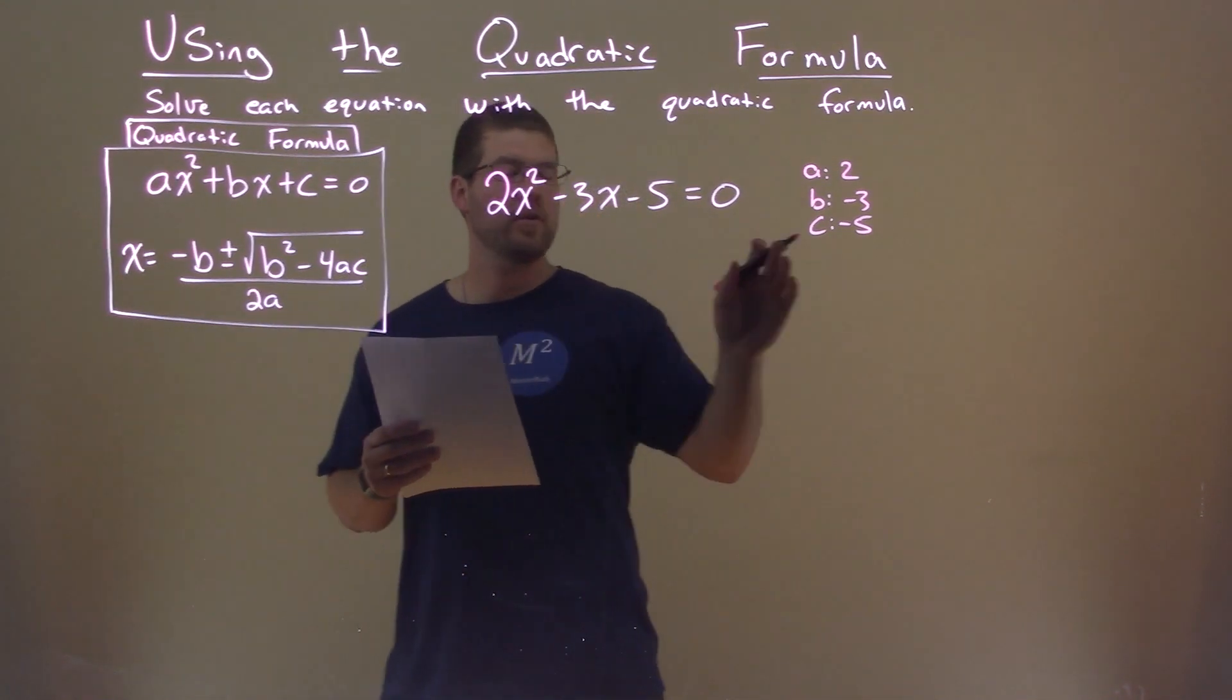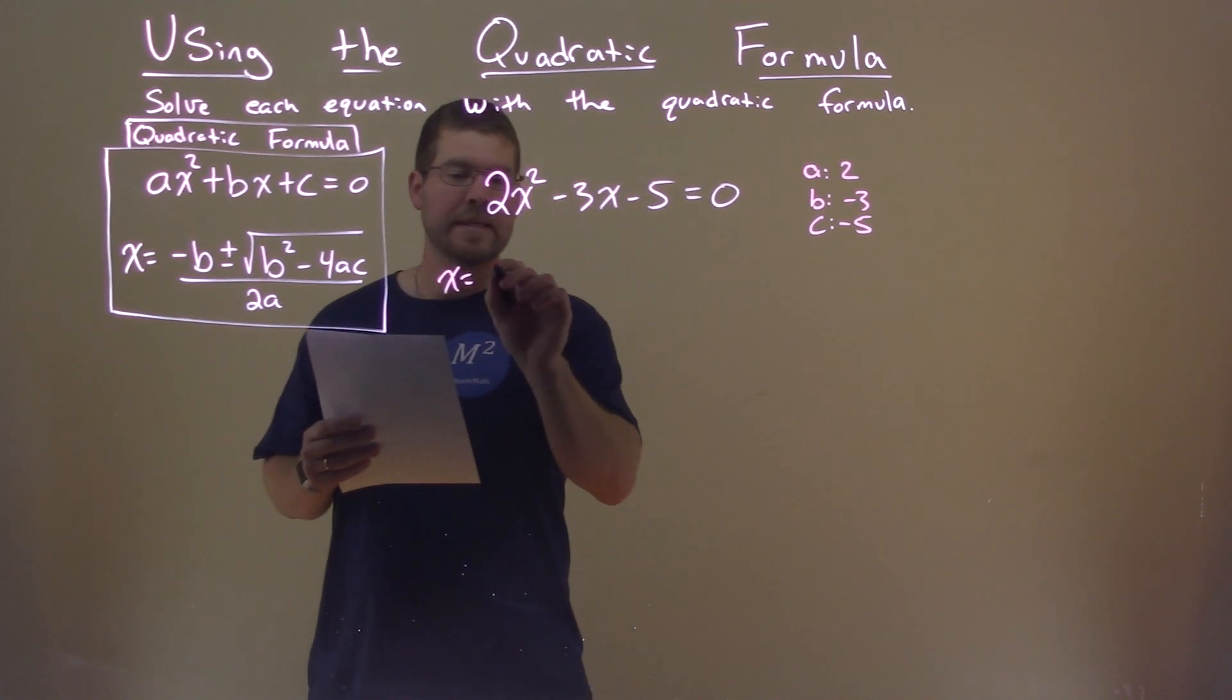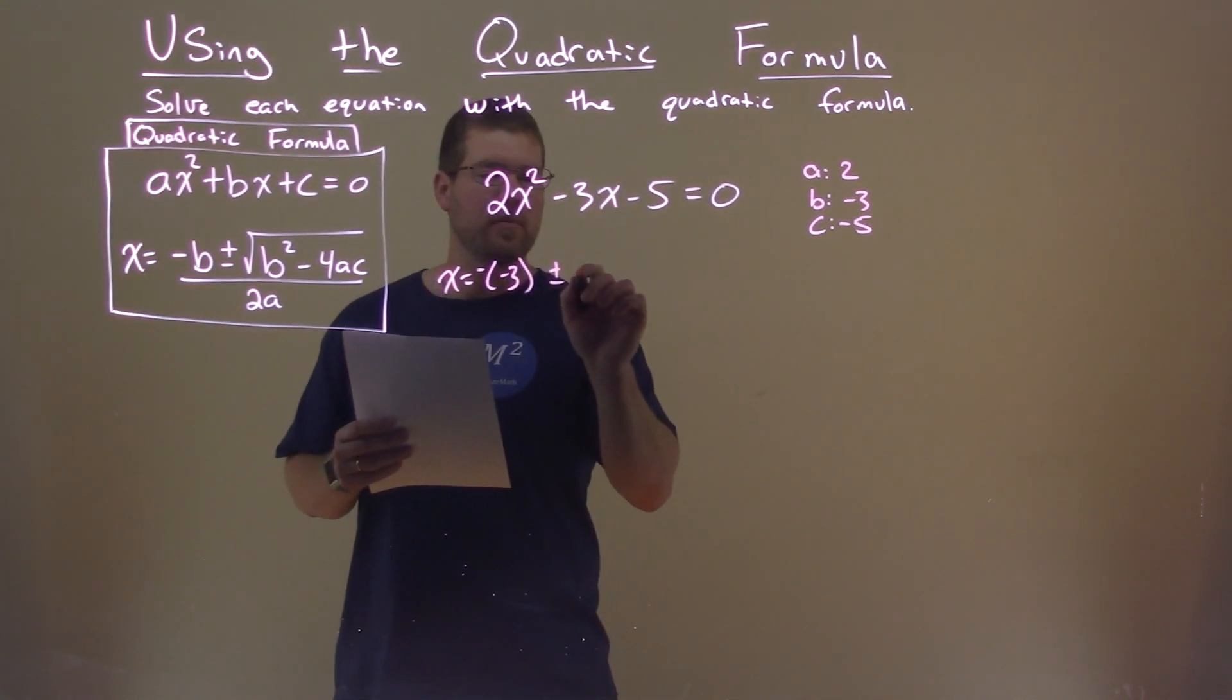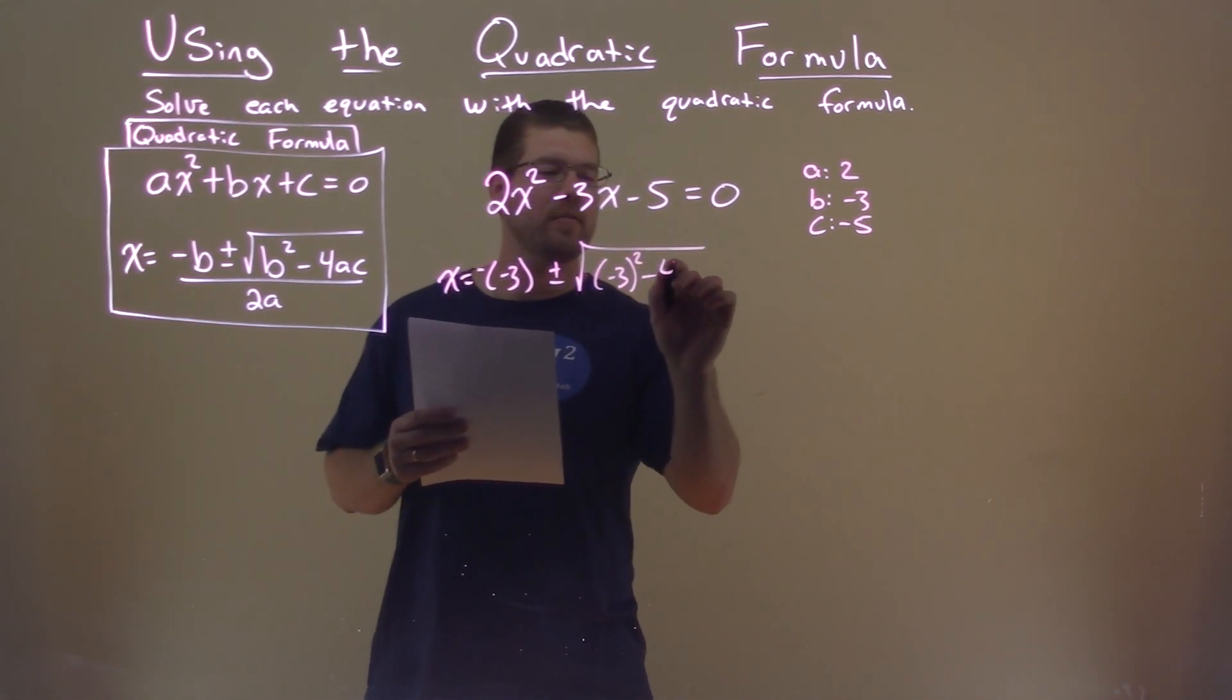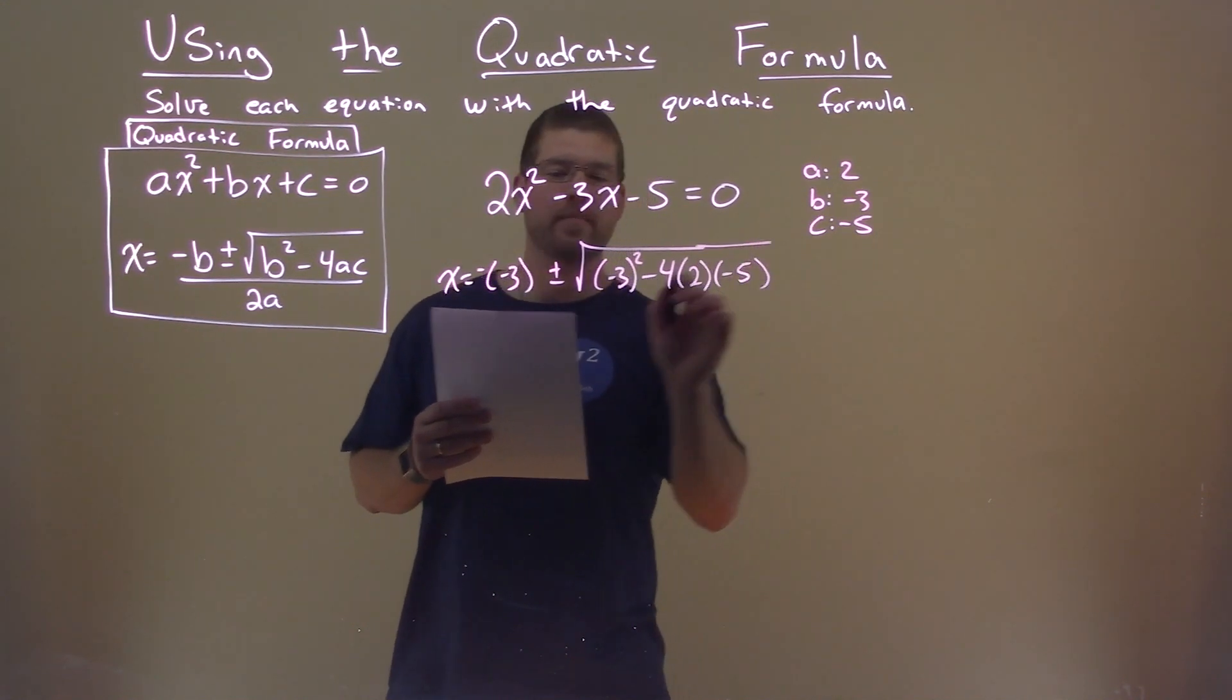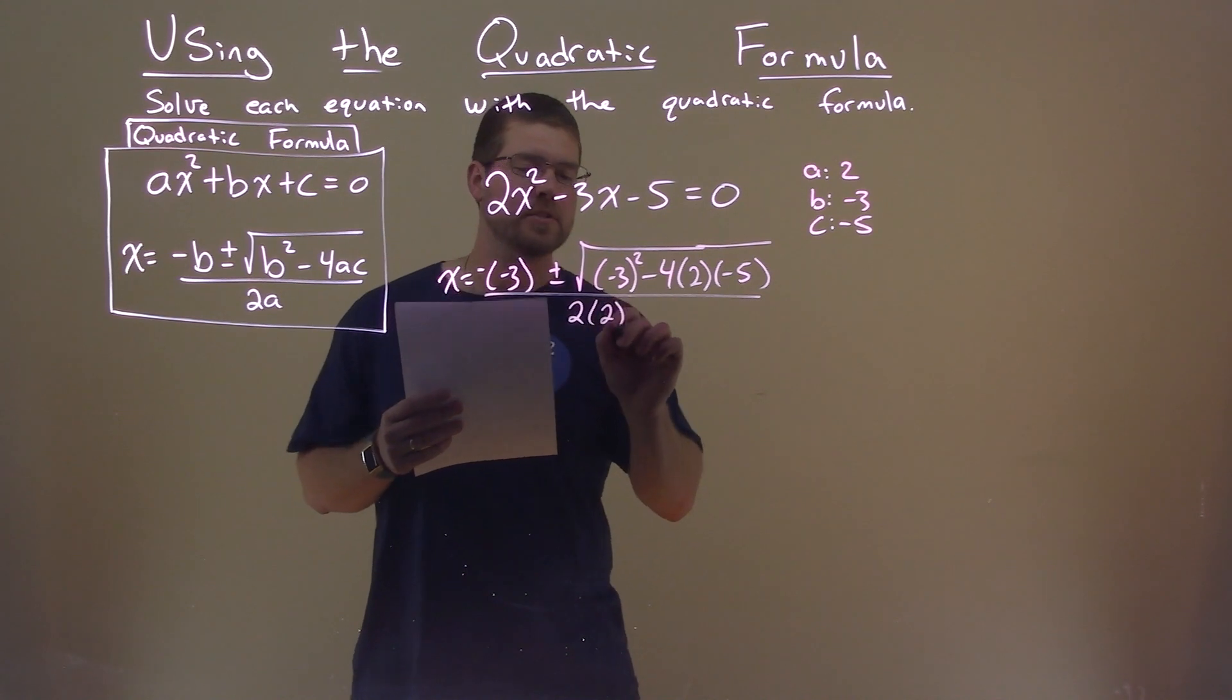So then from here, we want to use our quadratic formula. Our variable x is equal to negative b, so negative negative 3, plus or minus the square root, negative 3 squared, minus 4 times a, which is 2, times c, negative 5, all over 2 times a, which is 2.